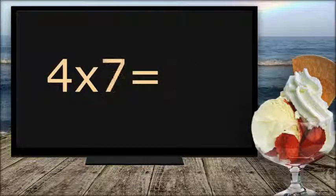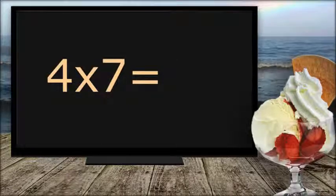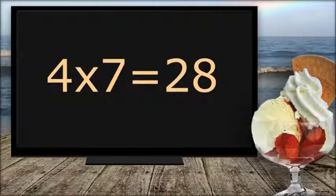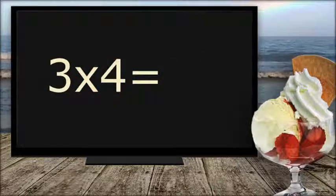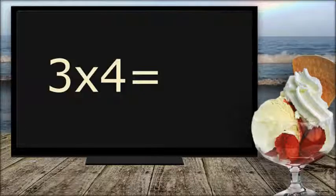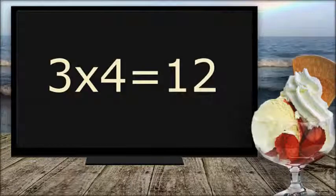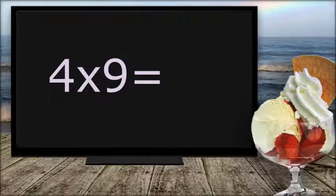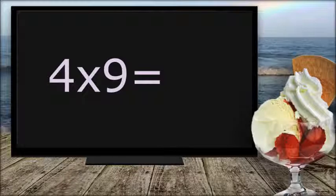Four times seven equals... Twenty-eight. Three times four equals... Twelve. Four times nine equals... Thirty-six.